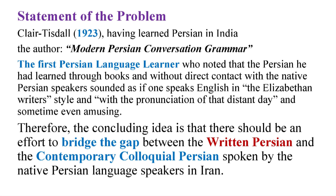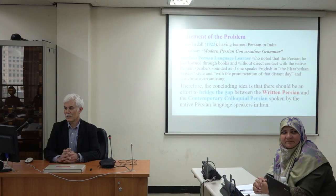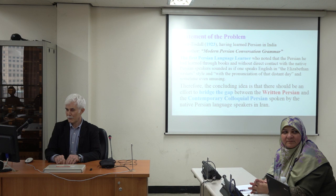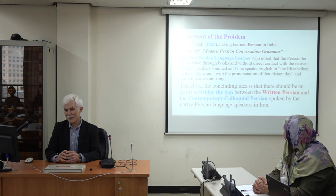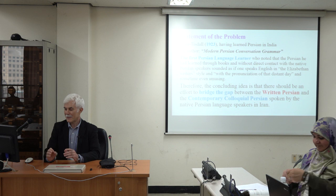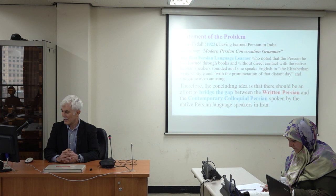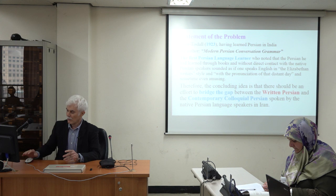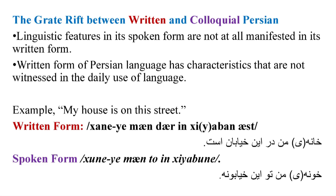The statement of the problem: the first person who recognized that the type of Persian language he had learned in India was not useful in Iran was somebody called Claire Thistel in 1923. He learned Persian in India, then moved with his family to Tehran and realized this language he was speaking was sometimes made fun of among Iranians. He concluded that it was as if he were speaking like Elizabethan writers when speaking Persian. The concluding idea is that there should be an effort to bridge the gap between written Persian and contemporary colloquial Persian spoken by native speakers.